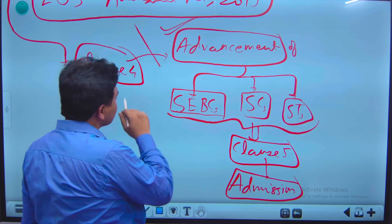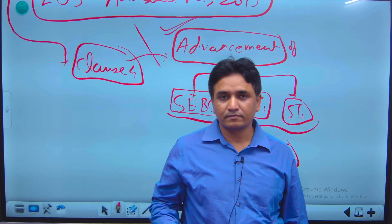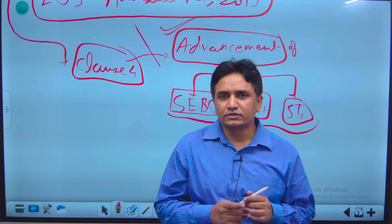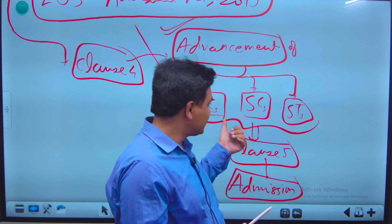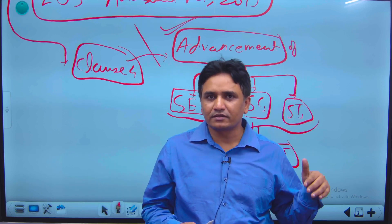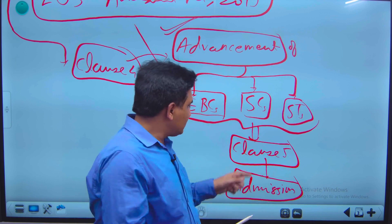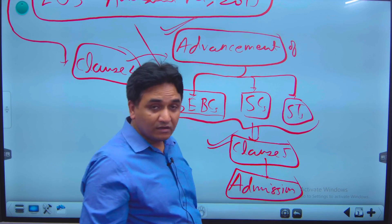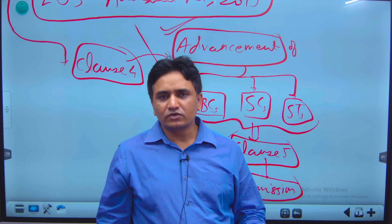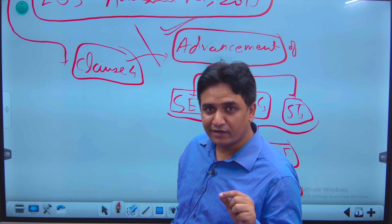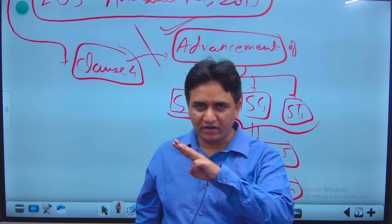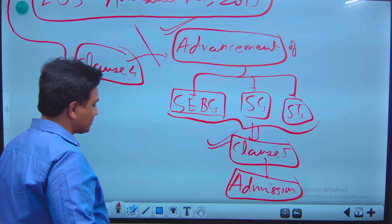So what is the connection between Clause 4 and Clause 5? Clause 4 is a general enabling provision which enables the state to make provisions for the advancement of these three categories. Taking that in view, the state enacted Clause 5, and this method of admission was enacted for the advancement of these three categories. You have to remember which categories are going to be beneficiaries under these clauses — these three categories are going to be benefited from this provision of the state.